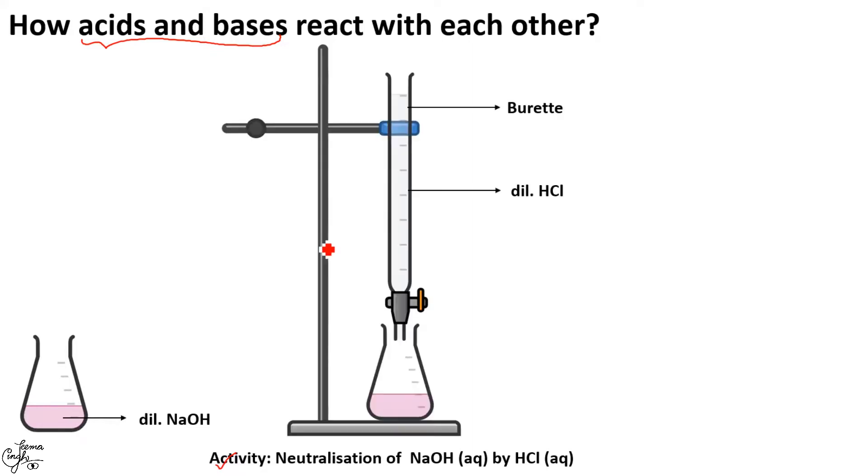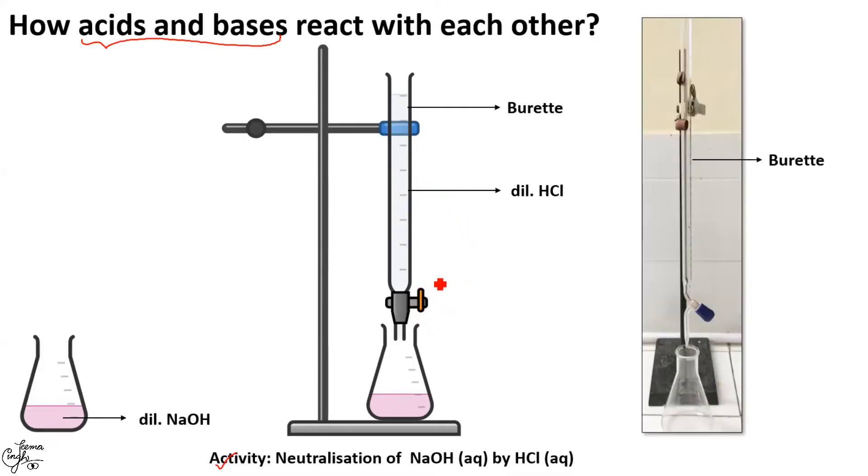The solution would acquire pink color as phenolphthalein has pink color in basic medium. Then, you're going to fill dilute hydrochloric acid solution in a burette which is a long graduated tube. You can see markings over here. Now, this long graduated tube has a stopcock or stopper at its lower end. Here it is. Let me show you the actual image. This is the burette which you can find in your science laboratory. Now, this burette is used for delivering known volumes of a liquid, especially in titrations.